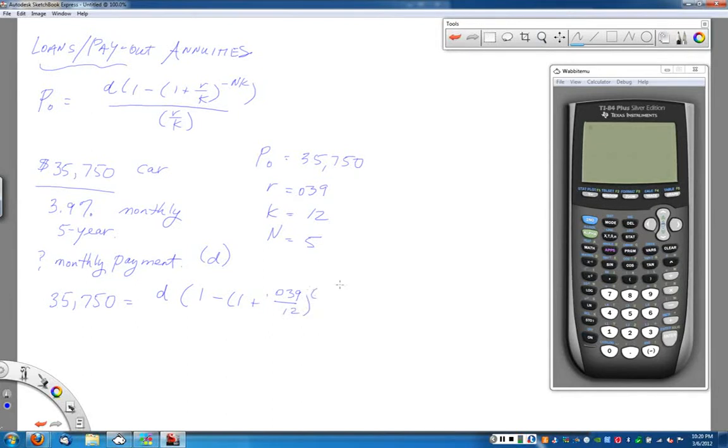Close the parentheses. Up in the exponent, and I cannot encourage enough to put that exponent in parentheses. It's going to be negative N, which is 5, times K, which is 12 in the exponent for this car loan. Then my formula finishes after the exponent. It's got a big set of parentheses.